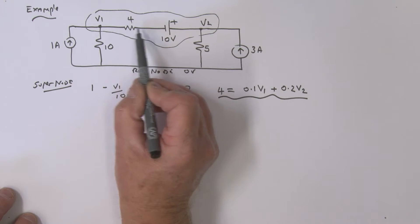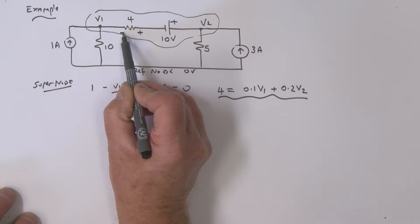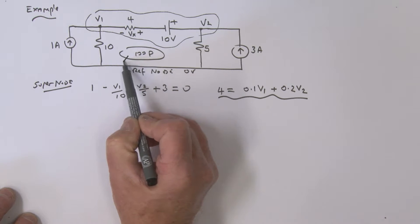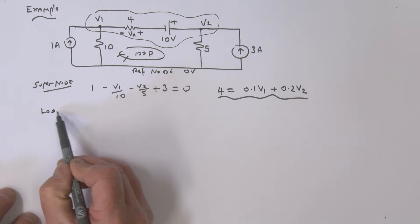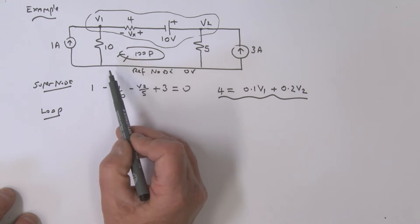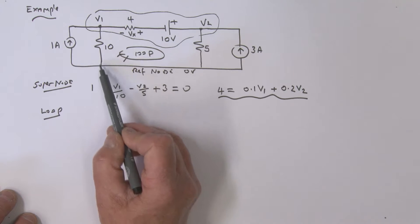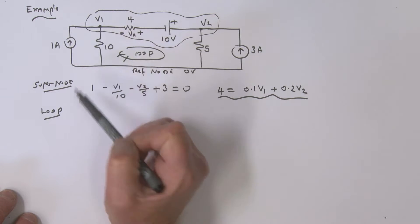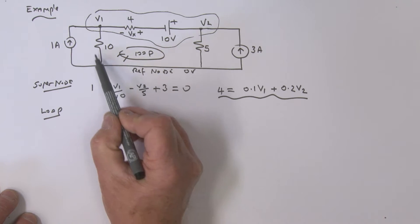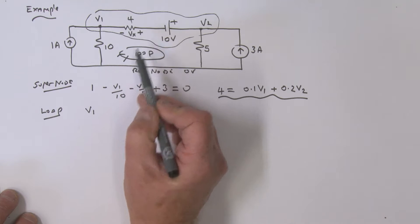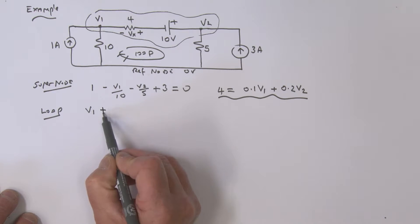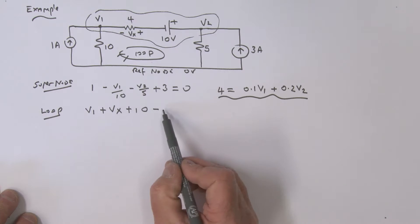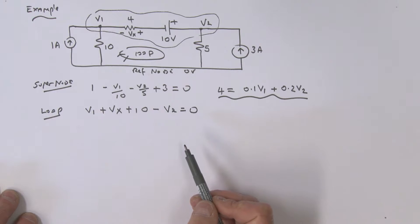Now let's define a voltage across that four-ohm resistor — I'll define it plus/minus and call it Vx. Taking a loop in this direction: going up in voltage I call it positive, going down negative. So going around: plus V1, going up to a minus-to-plus is plus Vx, then plus 10, then dropping so minus V2, and all of that equals zero.